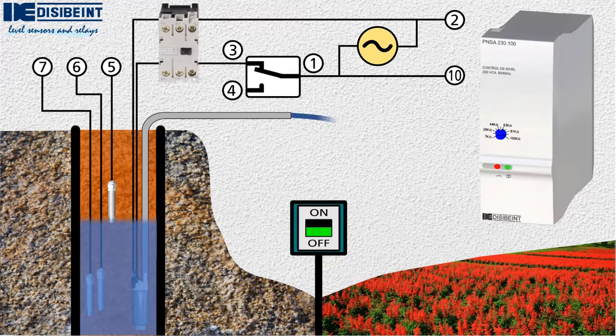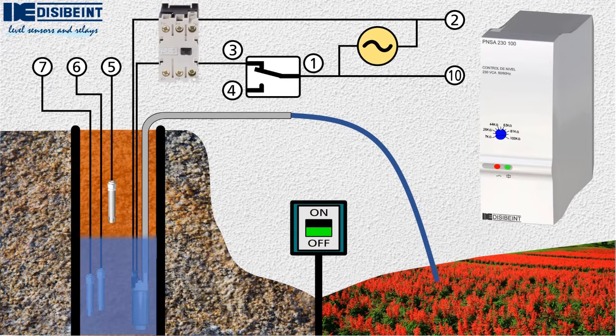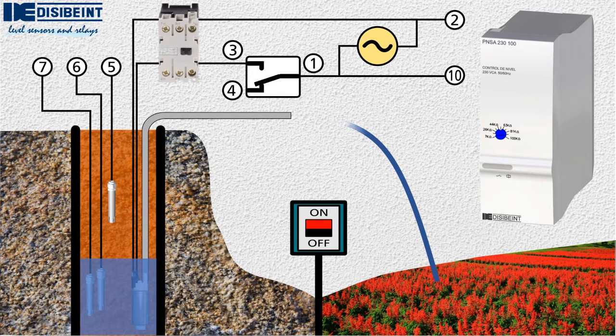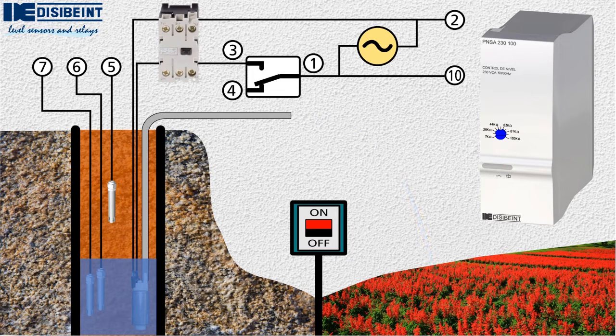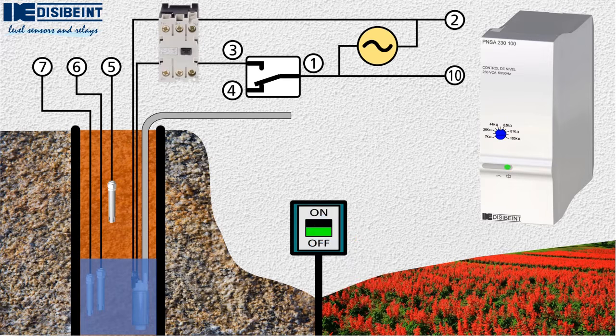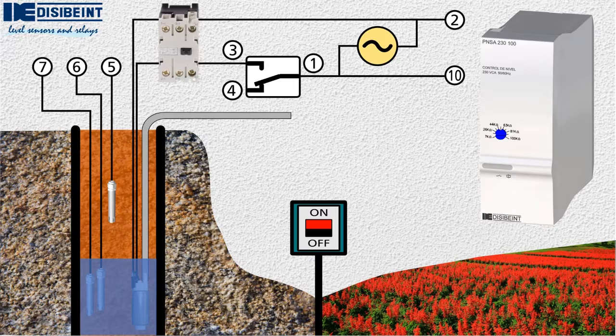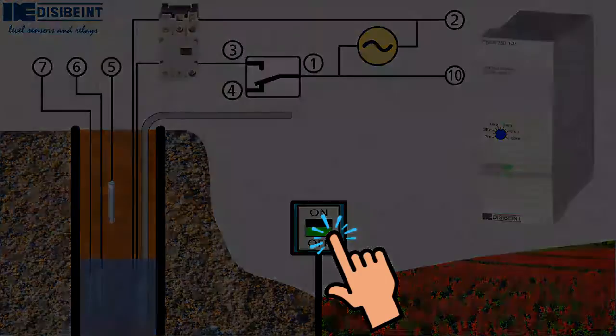By stopping the system manually, we restore the conditions of the PNSA level relay, waiting for a new startup. In this case, if the water level is between the maximum and minimum probes, the pump will not start until the water reaches the point where the maximum probe is located.